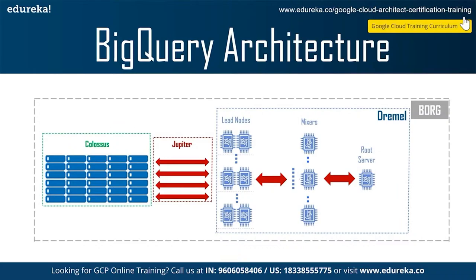A single user can get thousands of slots to run their queries. Dremel is widely used at Google — from search to ads, from YouTube to Gmail — so there's great emphasis on continuously making Dremel better. BigQuery users get the benefit of continuous improvements in performance, durability, efficiency, and scalability without downtime associated with traditional technologies. BigQuery also relies on Colossus, Google's latest generation distributed file system. Each Google data center has its own Colossus cluster with enough disks to give every BigQuery user thousands of dedicated disks at a time. Colossus handles replication, recovery, and distributed management. Colossus is fast enough to allow BigQuery to provide similar performance to many in-memory databases, but leveraging much cheaper yet highly parallelized, scalable, durable, and performant infrastructure.